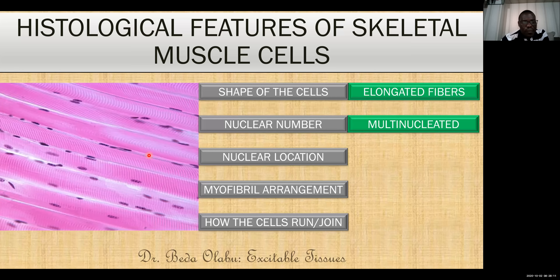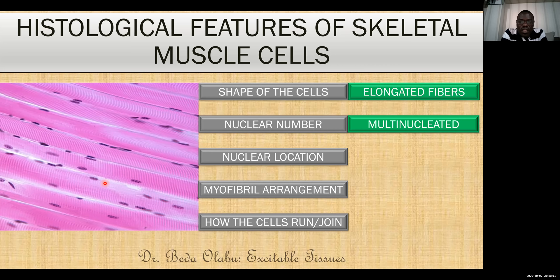The nuclei in skeletal muscle are peripherally located — they are at the cell membrane rather than at the center of the cell. In terms of actin and myosin arrangement, what we see under light microscopy is alternating light and dark bands, termed striations. Skeletal muscle cells are striated, or display cross striations. These striations exist because actin and myosin are regularly arranged in skeletal muscles — dark zones represent where myosin filaments fall, lighter zones represent areas without myosin.